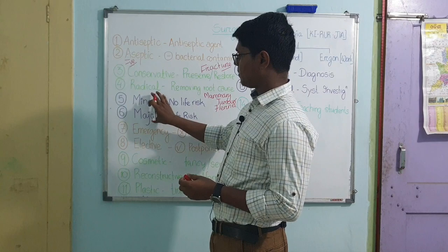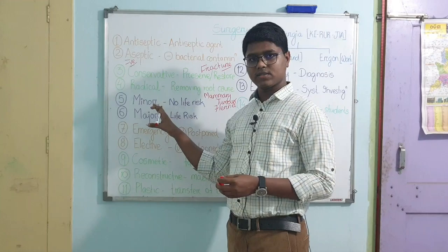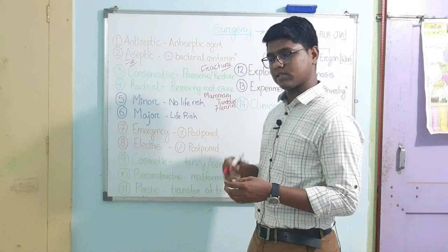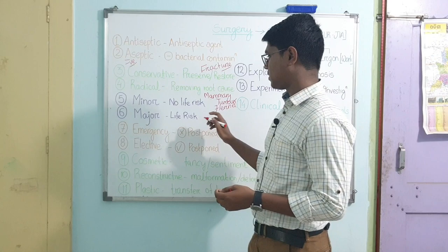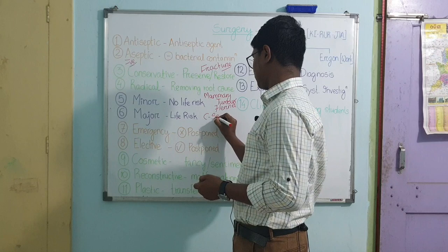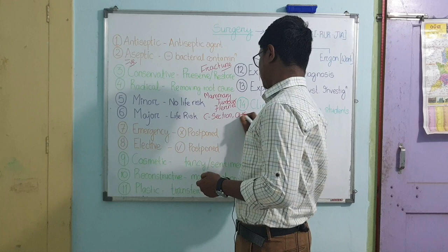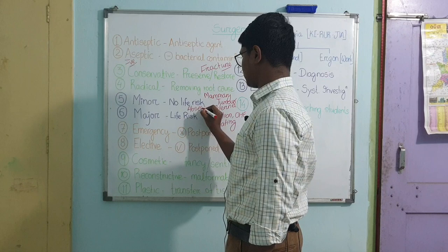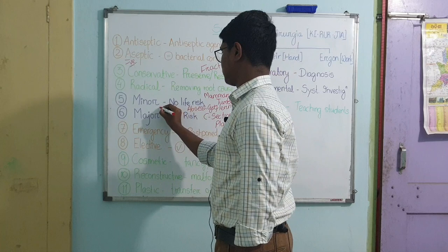Next, minor versus major surgery, classified according to life risk. If there is no life risk it is minor surgery; if there is life risk it is major surgery. All operations performed under general anesthesia are major surgeries because general anesthesia itself poses a threat to life. Examples of major surgery are C-section, OHE, and plating. Minor surgeries include abscess opening, cyst removal, and wound dressing.